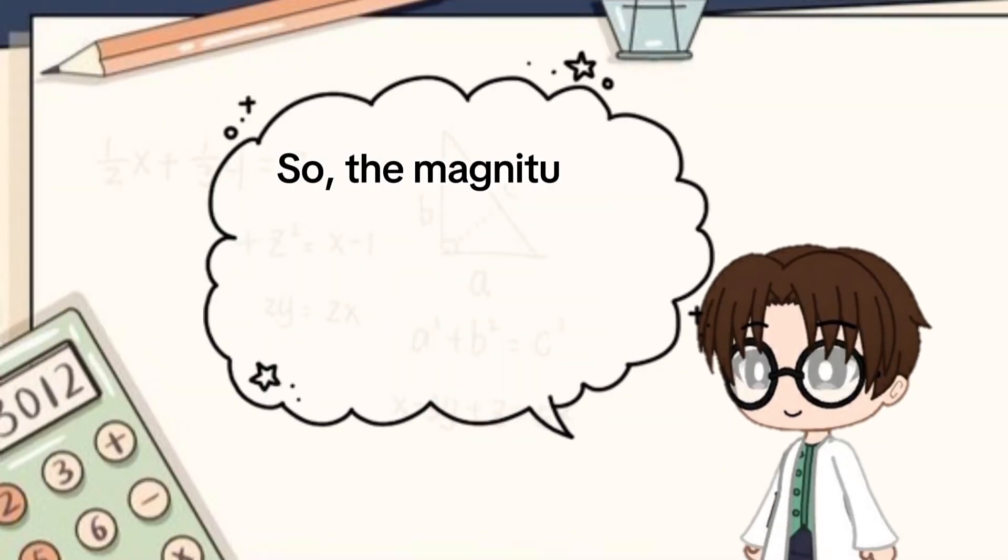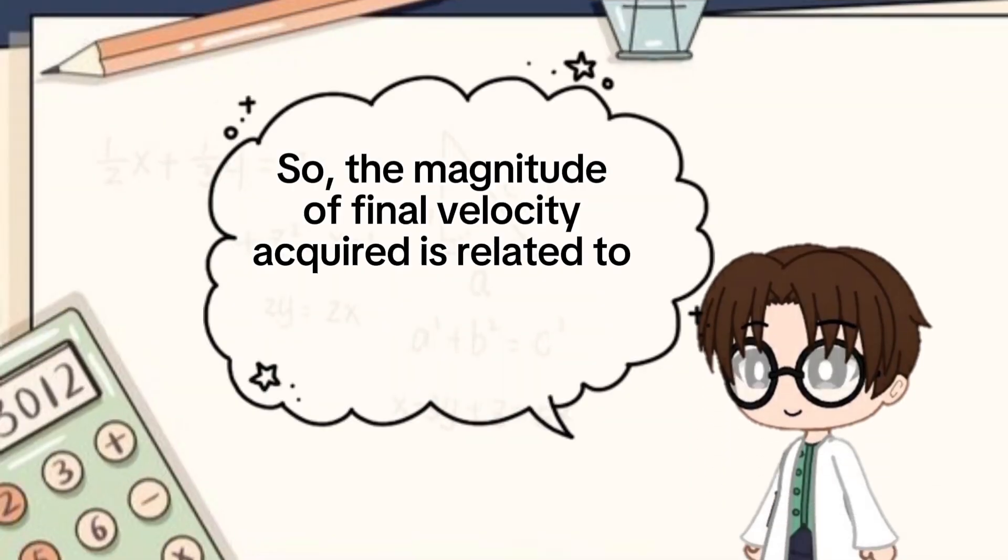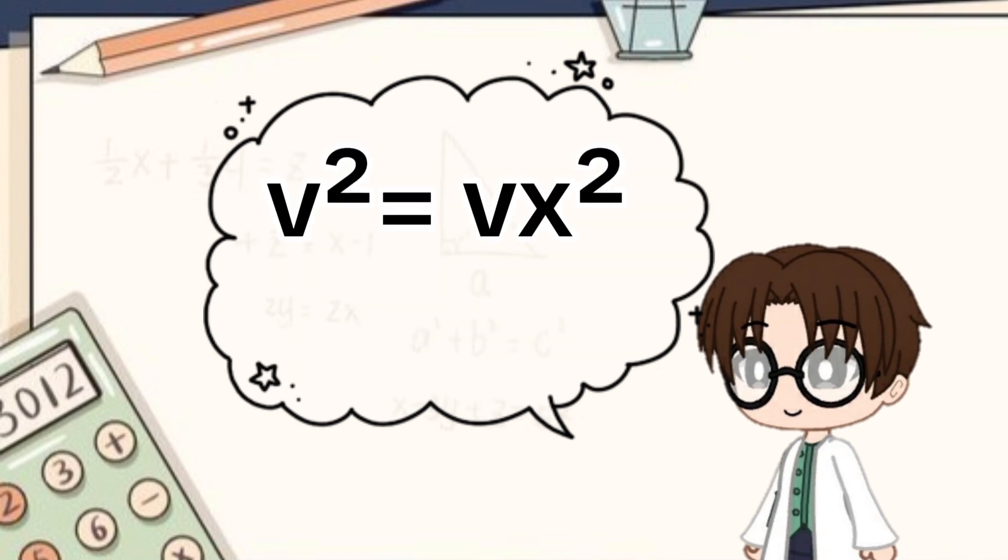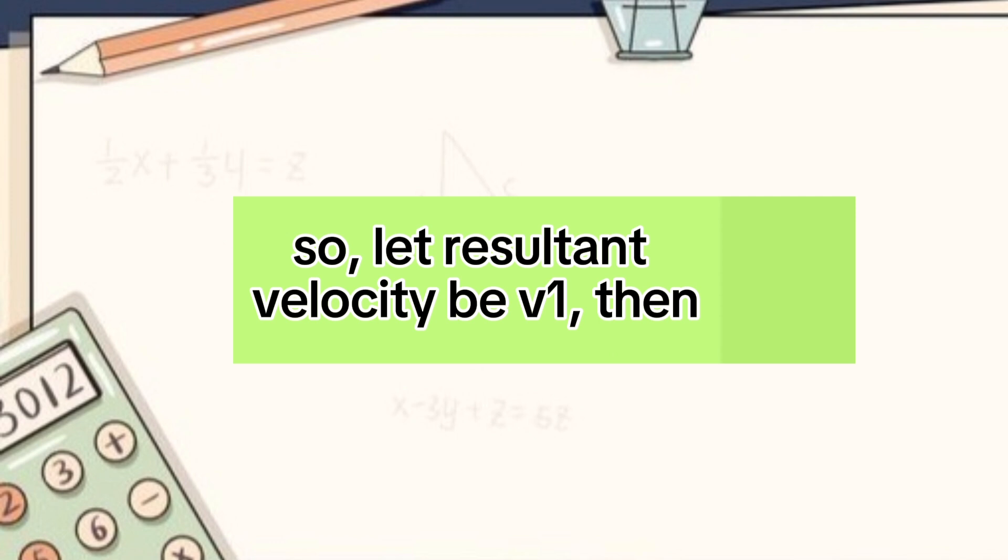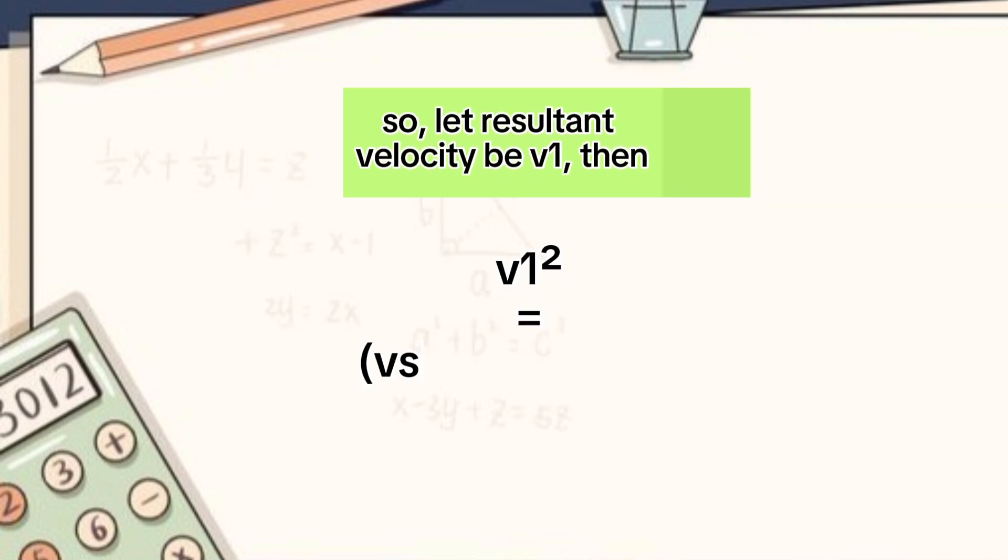So the magnitude of final velocity acquired is related to magnitude in x and y directions as v square is equal to vx square plus vy square. So let resultant velocity be v1. Then v1 square is equal to v sin x minus delta v cos x whole squared plus v cos x plus delta v sin x whole squared.